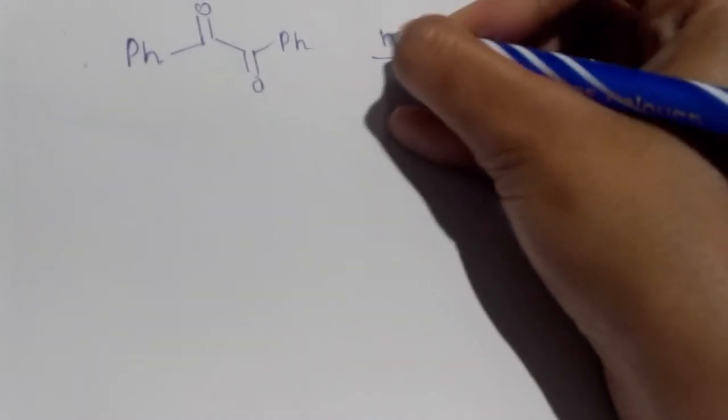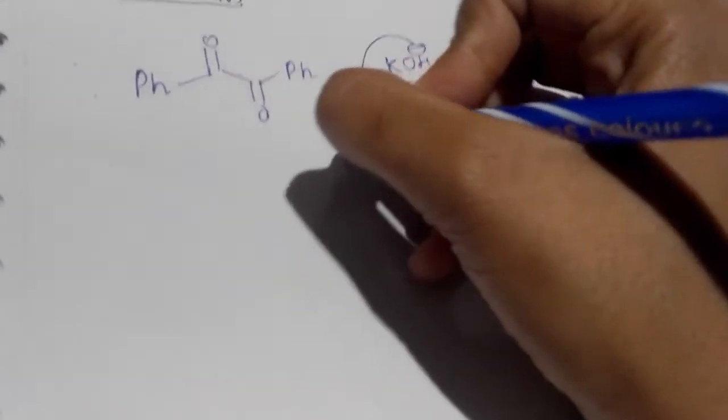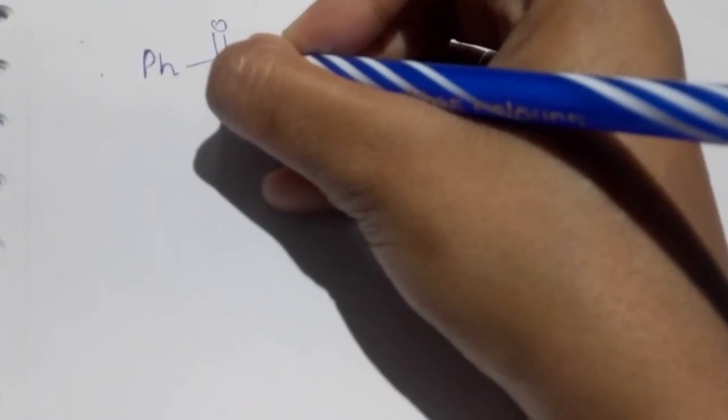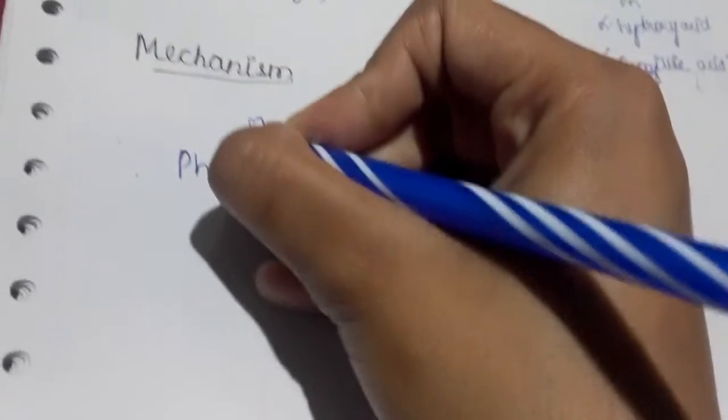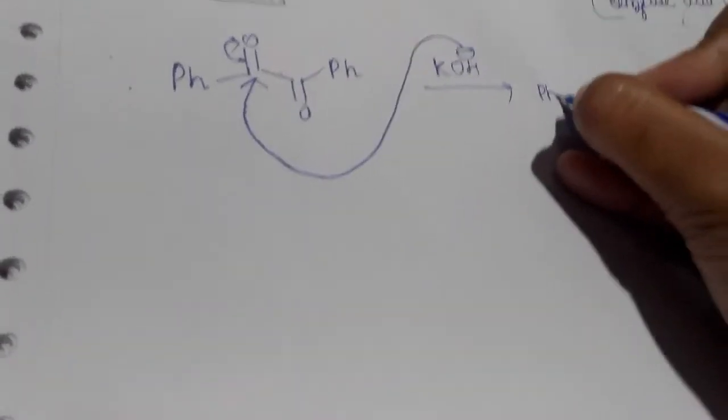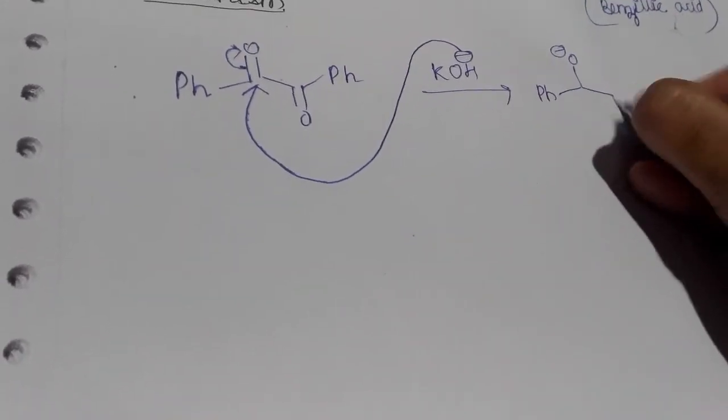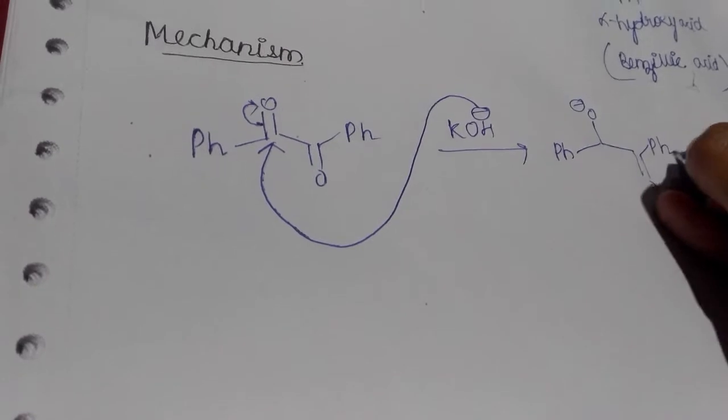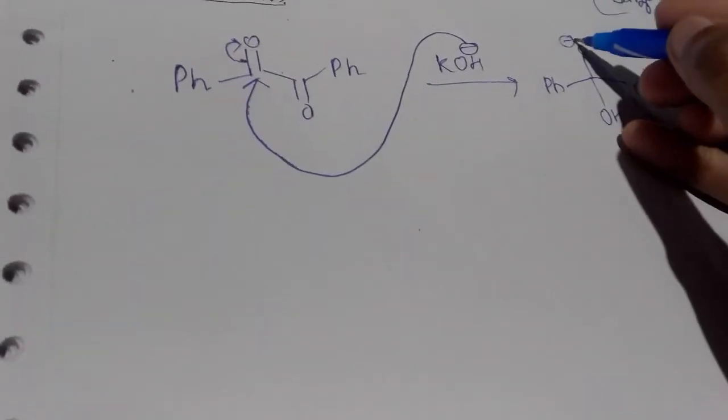Now for the mechanism, if we take the substrate and then from the base, suppose we are taking potassium hydroxide, this base comes and attacks on any one of the carbonyl compound at this positive place. If it attacks then definitely this bond breaks and then what we get is a structure like this.